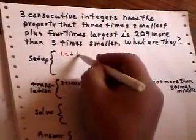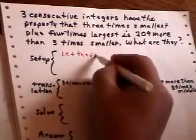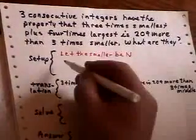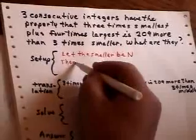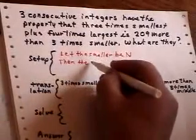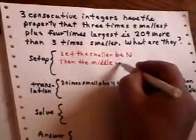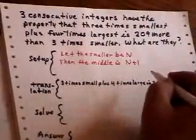So your setup here goes the following. Let the smaller be n. Then the middle, since they're consecutive, and that means they're one apart, the middle would be n plus one.